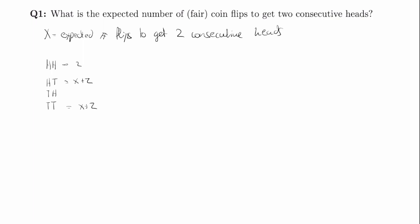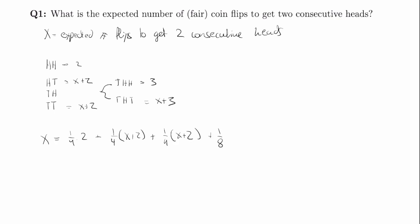The only other scenario is tails-heads. For tails-heads, we split this into two separate cases. One is where we get heads on the third throw: tails-heads-heads. The second is if we get tails-heads-tails. In that case, the expected number of flips to get two consecutive heads is X plus three, because we've flipped three times and we're back where we started. And tails-heads-heads is just three. So X equals one-fourth times two, plus one-fourth times (X plus two), plus one-fourth times (X plus two), plus one-eighth times three, plus one-eighth times (X plus three).